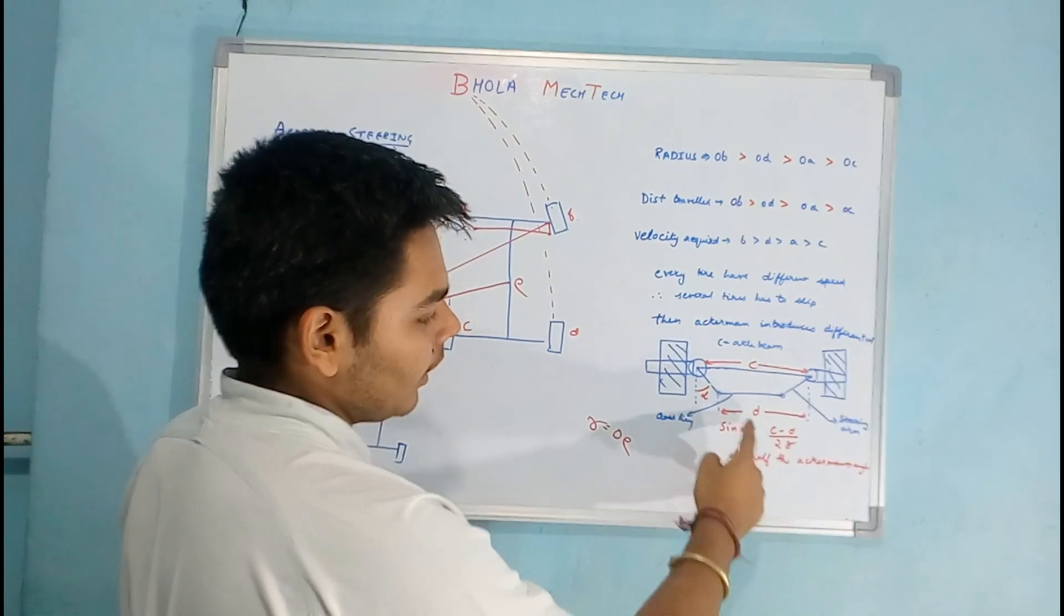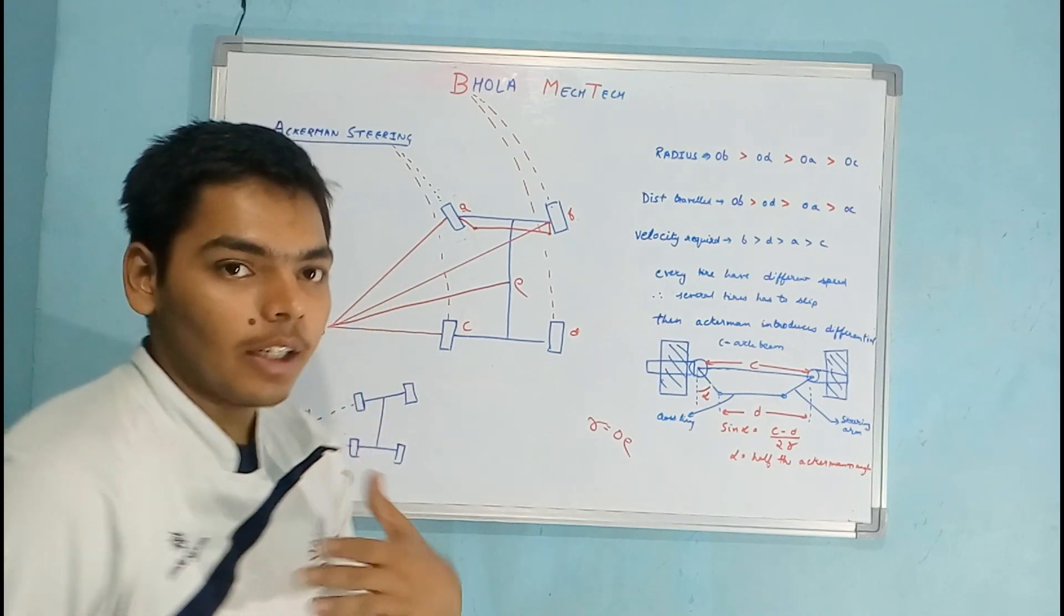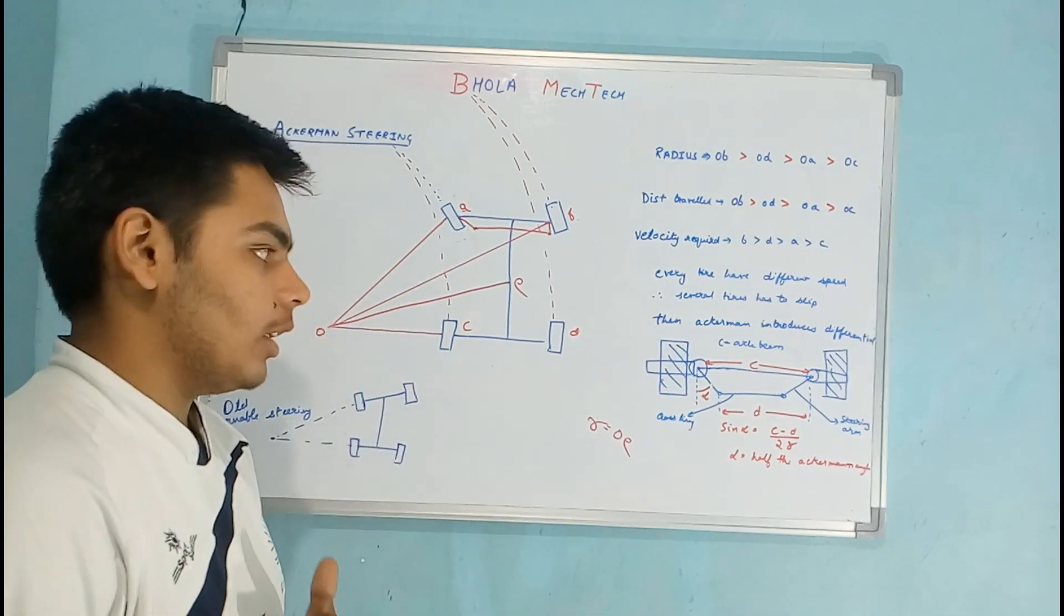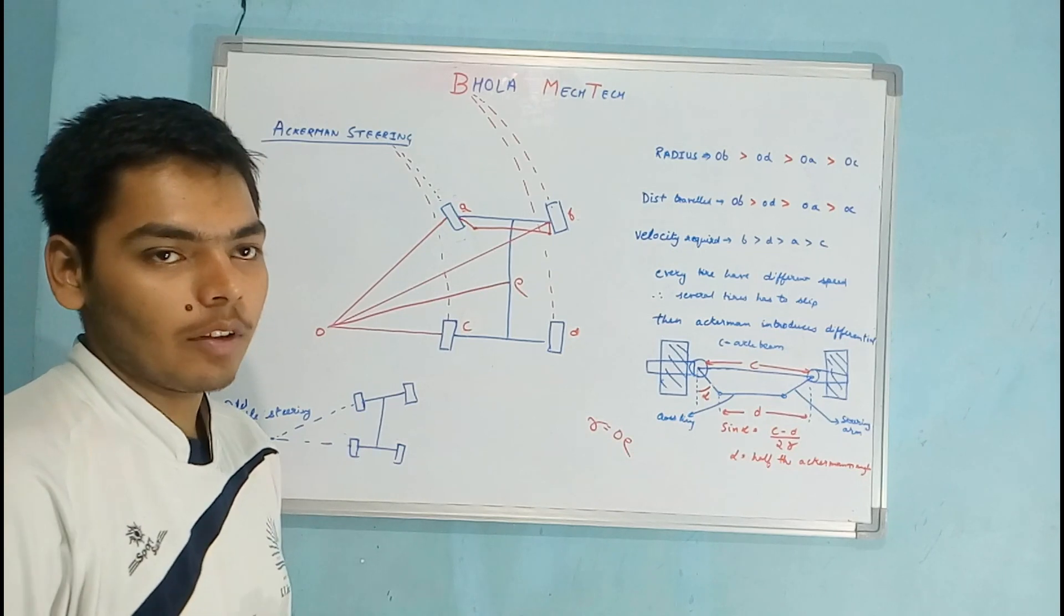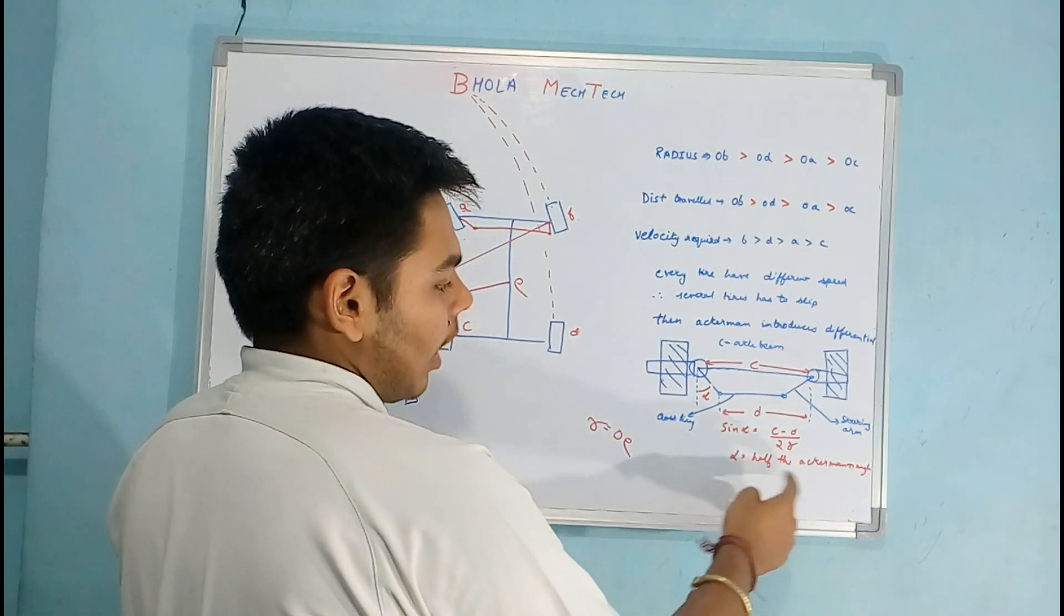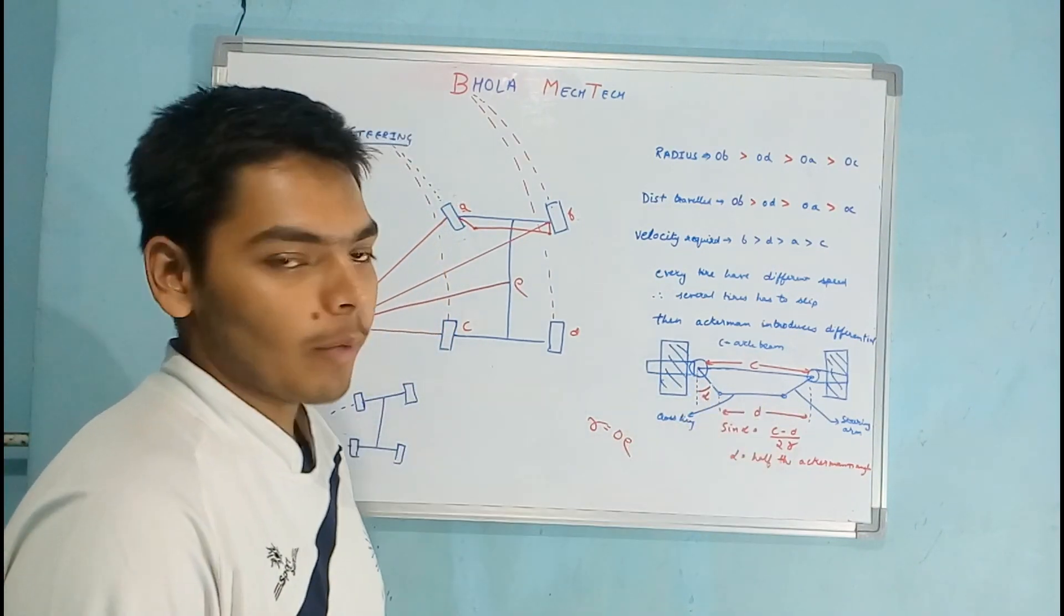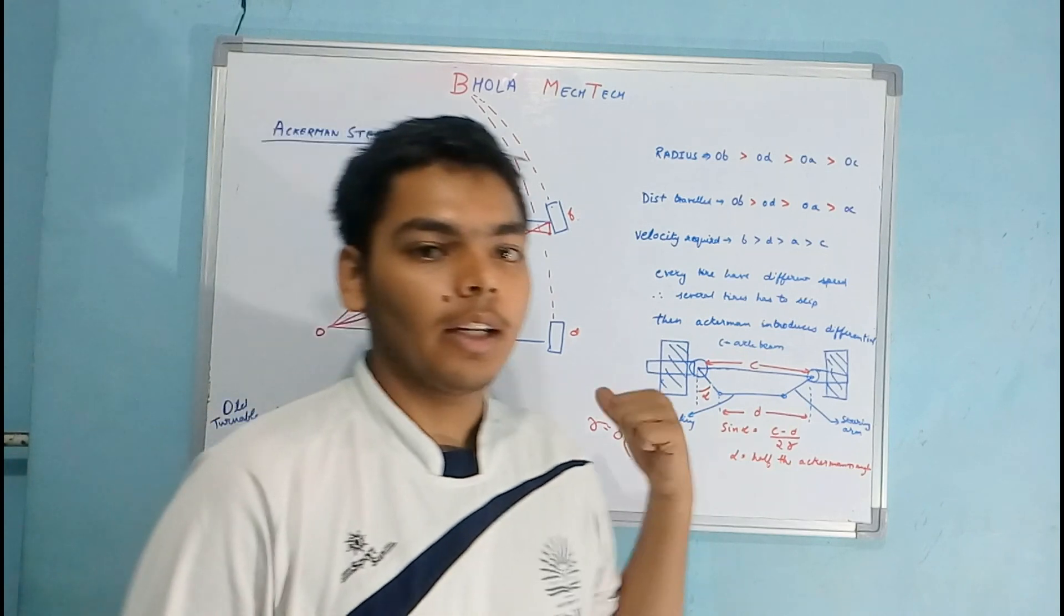So this is the d, and 2r is the diameter of the turning, diameter of the vehicle. So 2 times r is equal to 2 times turning radius of the vehicle. This can give you half the Ackermann angle and you can make this four-part link mechanism and you can attain this geometry.